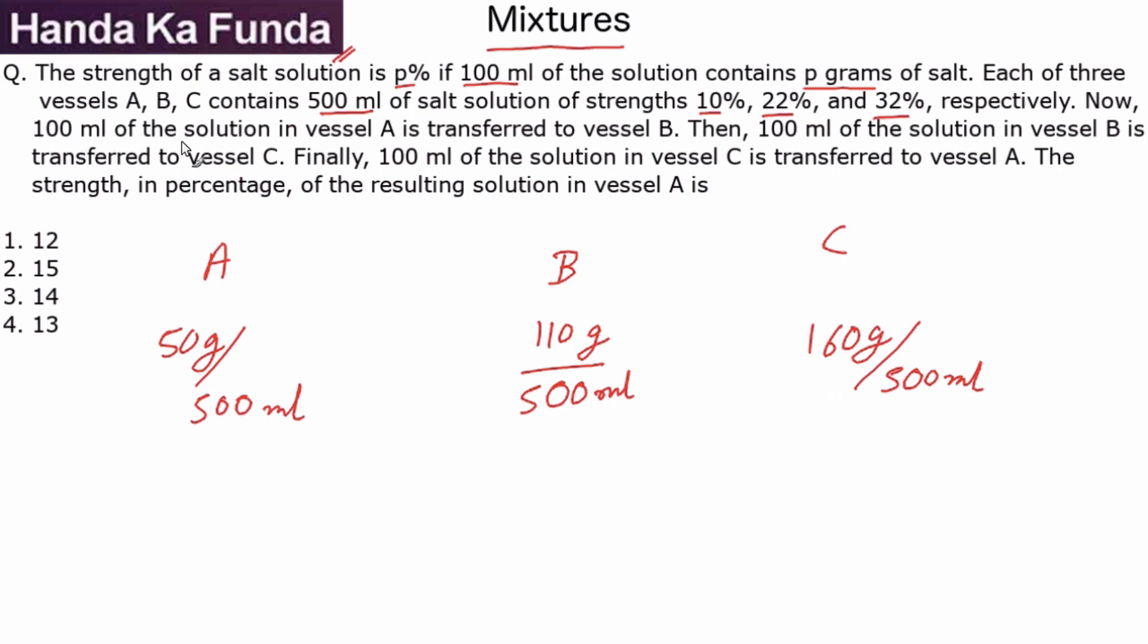Now 100 ml of the solution in vessel A is transferred to vessel B. When you transfer 100 ml of the solution, how much salt are you transferring? This is one-fifth of the solution, so one-fifth of the salt will get transferred or 10 grams, which means B from 110 grams will now become 120 grams in a total of 600 ml. On the other hand, A has lost 10 grams and 100 ml, so this will now become 40 grams out of a total of 400 ml.